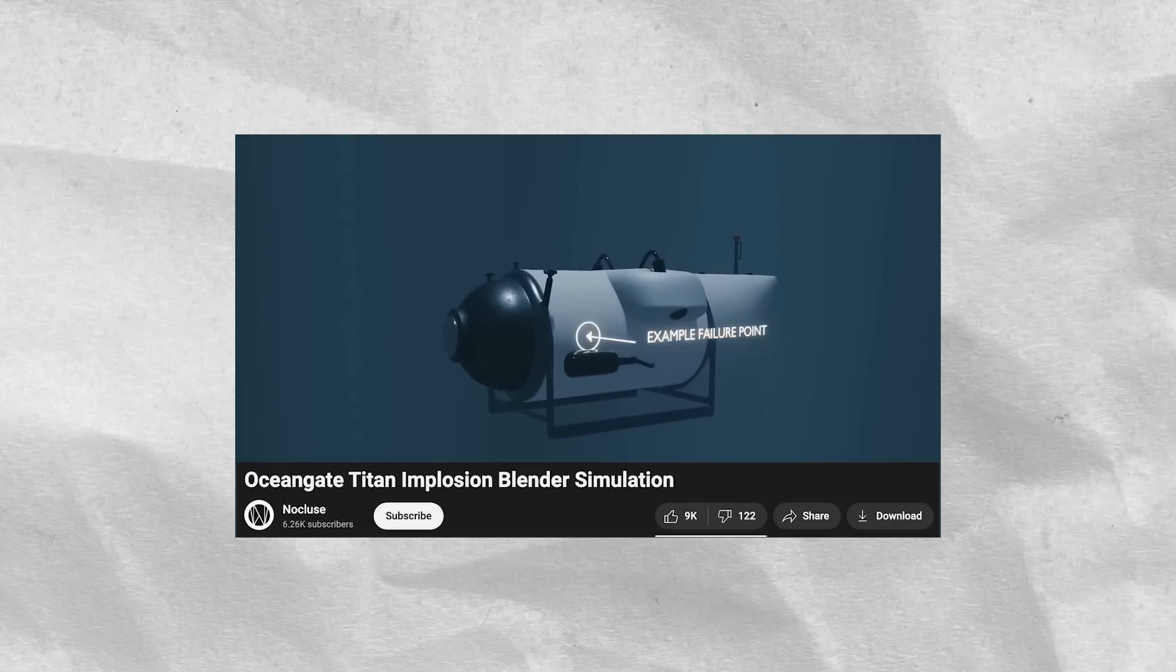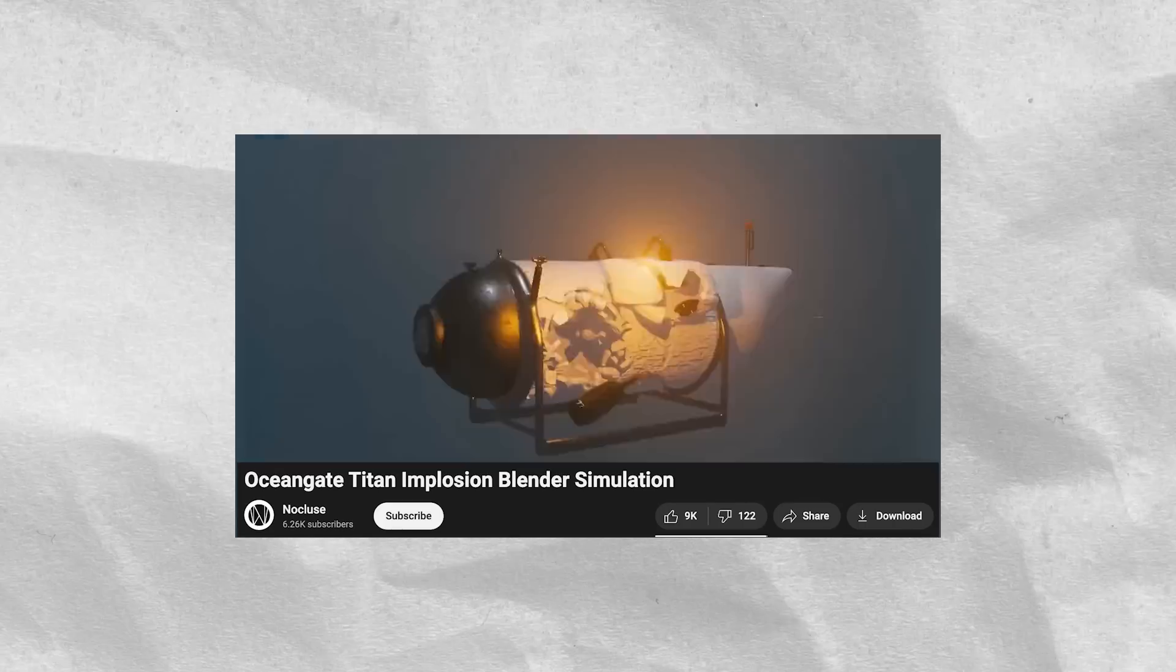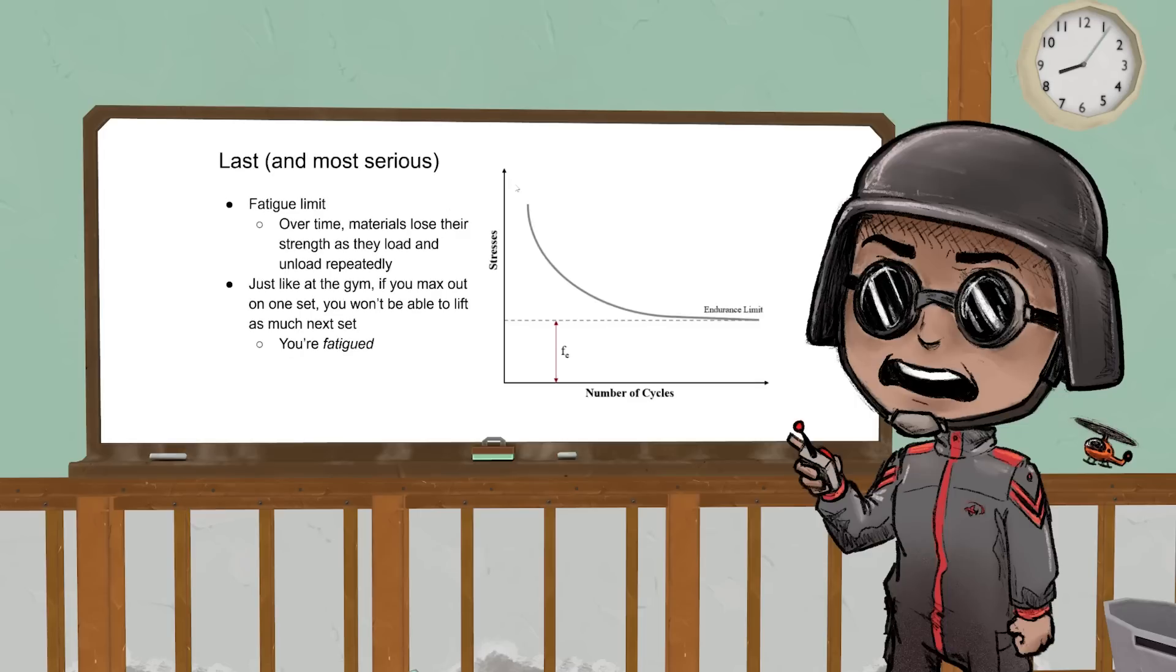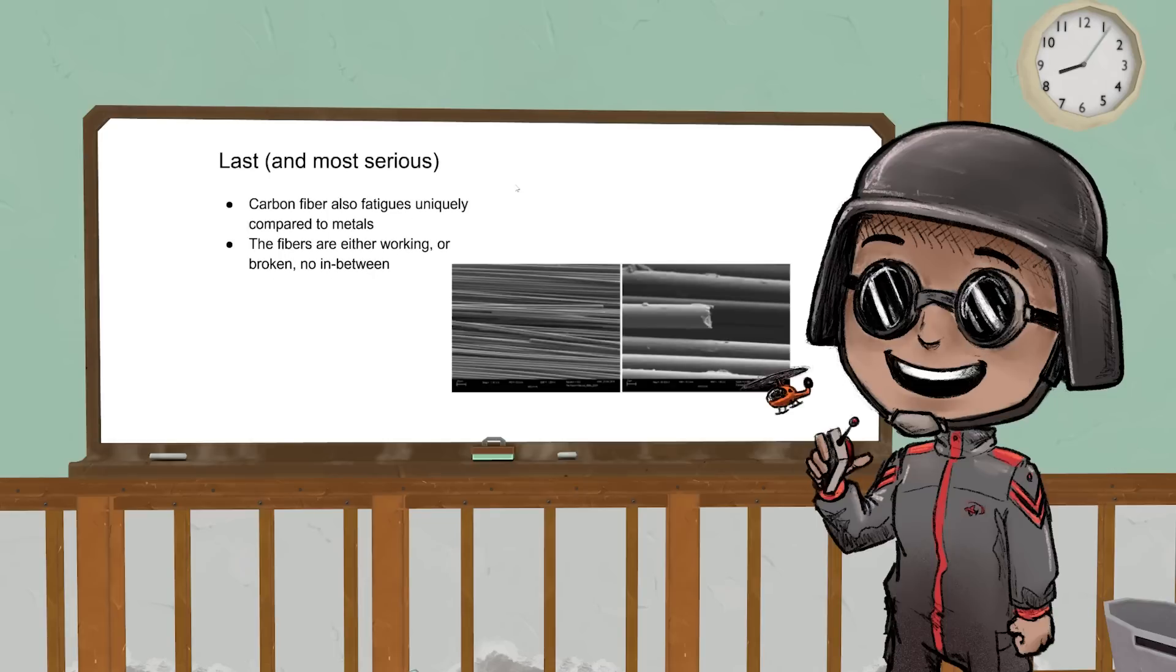This is a problem over time—materials lose their strength, just like if you were at the gym and you maxed out on your first set, the next time you won't be able to lift as much. Carbon fiber fractures uniquely because it's a brittle material. That means it's either at full strength or broken and lifts nothing.